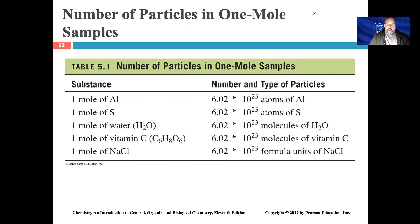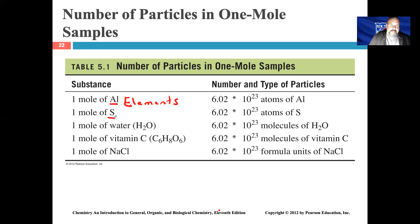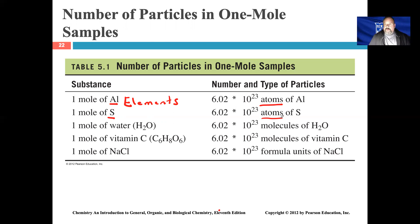When dealing with elements, one mole refers to atoms of that element. For example, if I said go to the lab and get one mole of aluminum, you would bring back 6.02 × 10²³ atoms of aluminum. Similarly, one mole of sulfur would be 6.02 × 10²³ atoms of sulfur. When looking at a mole of an element, we are essentially looking at atoms of that element.